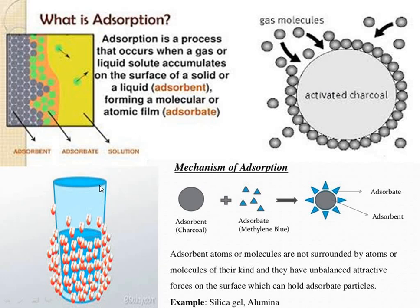One common example: a glass of chilled water at room temperature. If you leave it for 2 or 3 minutes, you will see water vapor surrounding the glass — they are on the surface of the glass. This is the best example of adsorption. The mechanism: the adsorbent, for example charcoal, attracts the adsorbate, which then accumulates on the surface of the adsorbent.